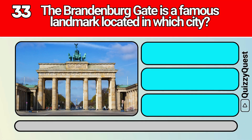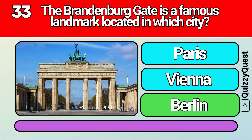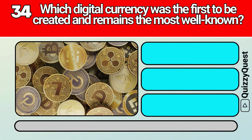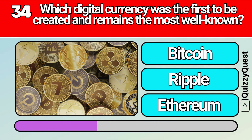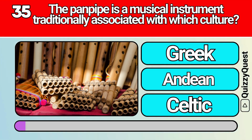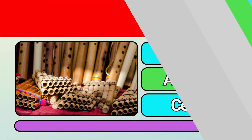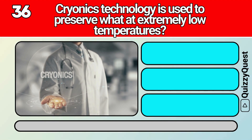The Brandenburg Gate is a famous landmark located in which city? Which digital currency was the first to be created and remains the most well-known? The pan pipe is a musical instrument traditionally associated with which culture? Cryonics technology is used to preserve what at extremely low temperatures?